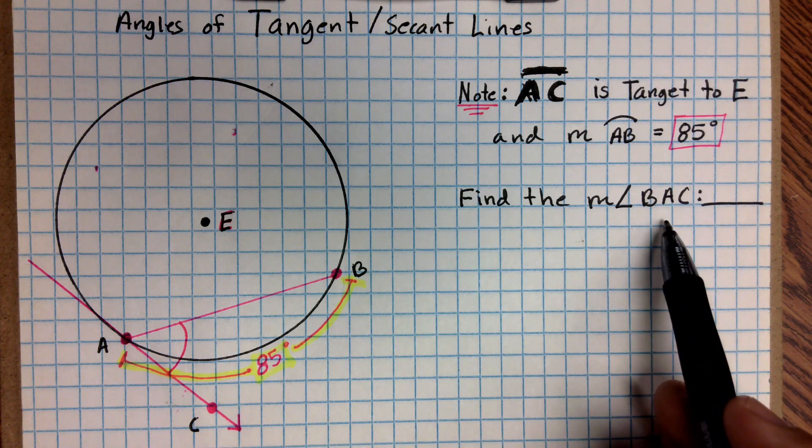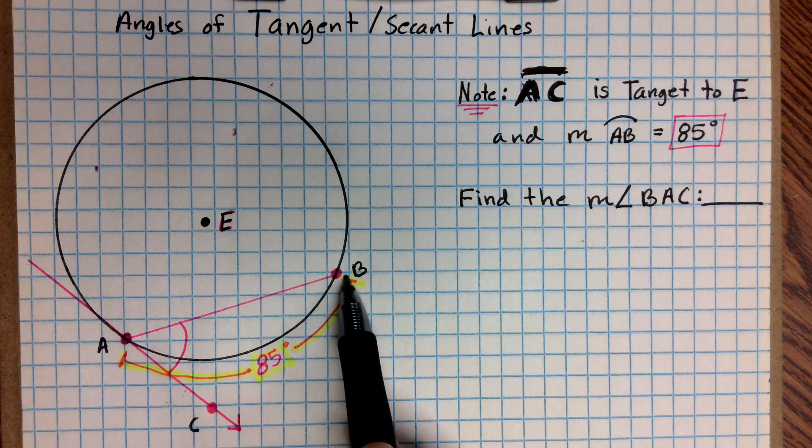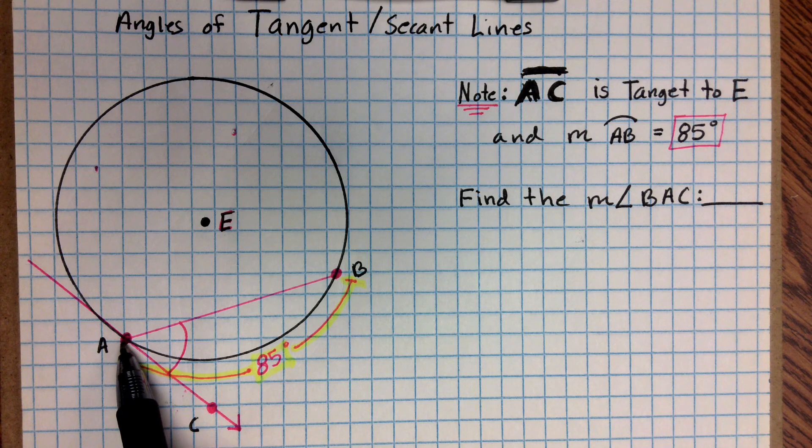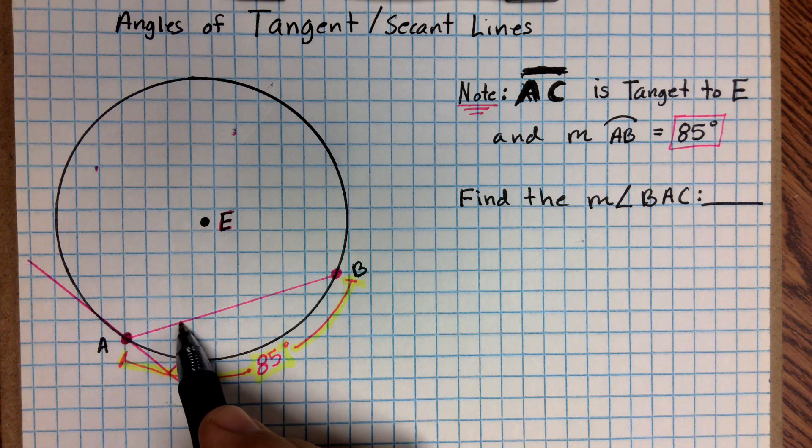Now it wants us to find the measure of angle BAC. In other words, the measure of the angle that's created by the secant line that intersects the tangent line. So we want to find this whole angle.